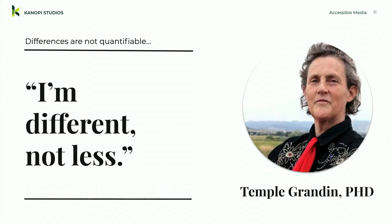One of my favorite quotes is from Temple Grandin, a life animal science professor at Colorado State University — one of the first people on the autistic spectrum to be a public spokesperson. The quote I like is: 'I'm different, not less.' Because we all think a little bit differently — it doesn't make us less of a person.